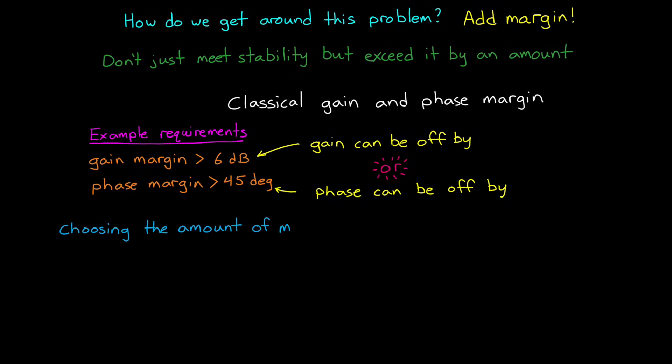or if the phase lags up to 45 degrees more than your model claims at the frequencies that it's specified at. And choosing the amount of margin you need depends on how uncertain you are that your model matches the real system. If we choose too little margin, then the differences between the model and the real system may cause greater deviations than what we've provisioned for.